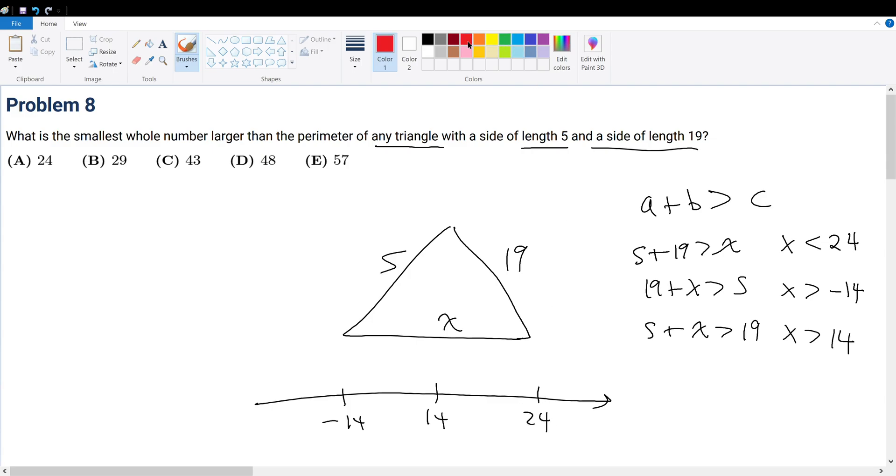I'll do this in red. We know that x is less than 24, so we have it like this. x is larger than negative 14, we have it like this. We also know that x is larger than 14, right here.